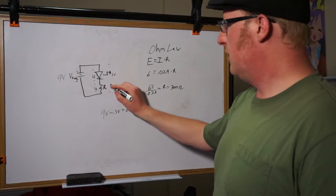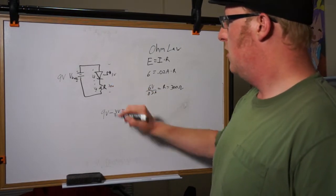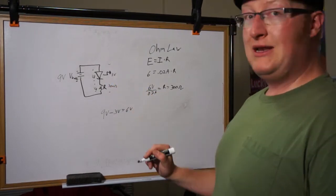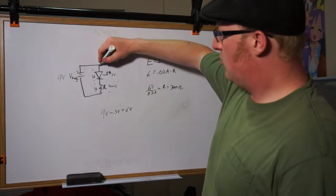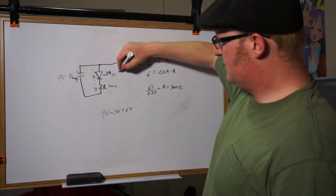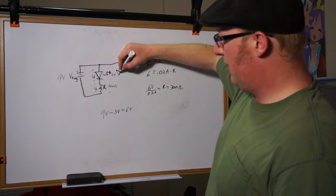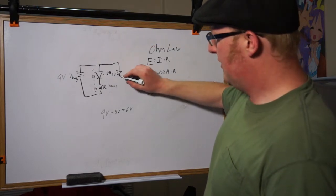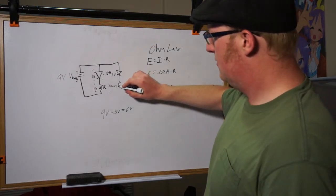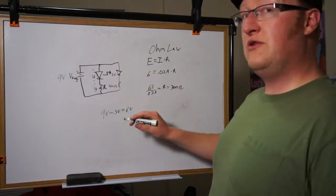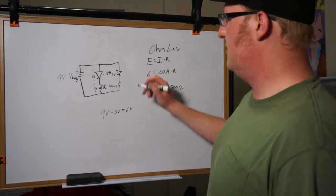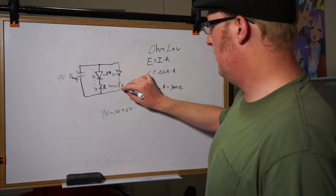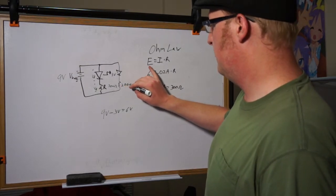So if we put a 300 ohm resistor here, it'll work. Neat thing, if we need more LEDs, we can just simply connect them, what's called in parallel, and this will give us more LEDs. Now, as long as we use the same LED, we can use the same calculations and the same resistors and get another 300 ohms for this guy.